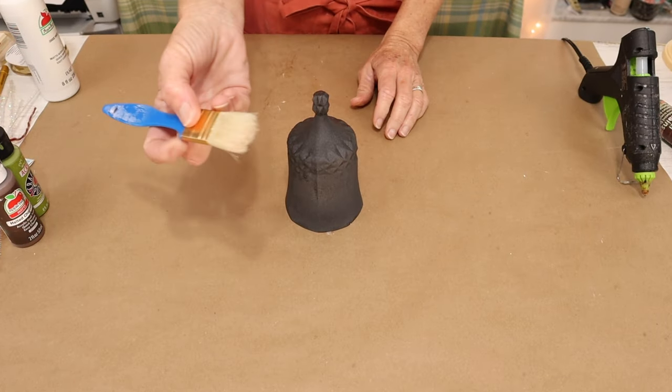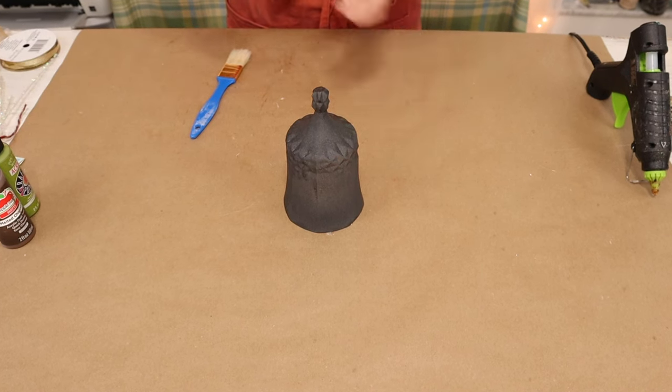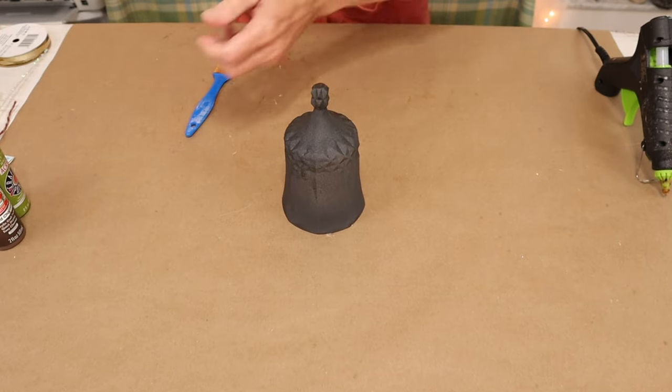Now we're going to come in and we're going to take a chip brush and some white paint, just some simple acrylic paint. And we're just going to dry brush the outside of our wine glass.